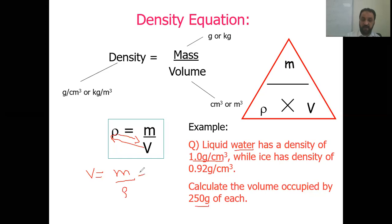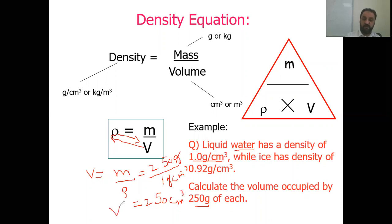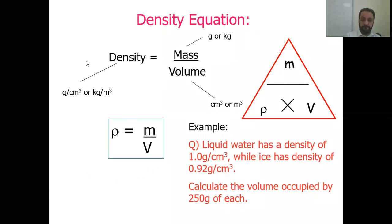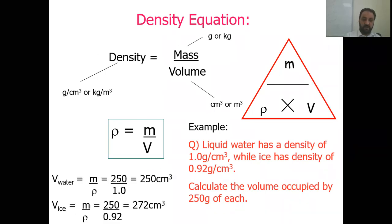For water, density is 1 gram per centimeter cube and mass is 250 grams. So volume equals 250 grams divided by 1 gram per centimeter cube — grams cancel, giving 250 centimeter cube. This is the volume of water. For ice, density is 0.92, so volume equals 250 divided by 0.92, which gives 270 centimeter cube.